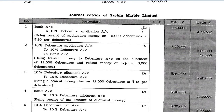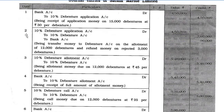Journal entries of Sachin Marble Limited. Entry 1: Bank account debit Rs. 4,50,000 to 10% Debenture Application account Rs. 4,50,000 — being receipt of application money on 15,000 debentures at Rs. 30 per debenture. Entry 2: 10% Debenture Application account debit Rs. 4,50,000 to 10% Debenture account Rs. 3,60,000 and to Bank account Rs. 90,000 — being transfer of money to debenture account on allotment of 12,000 debentures and refund on rejected 3,000 debentures.